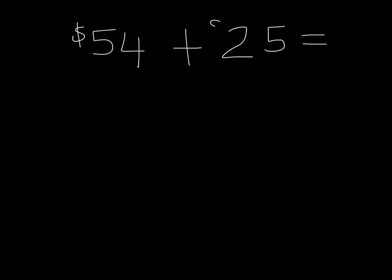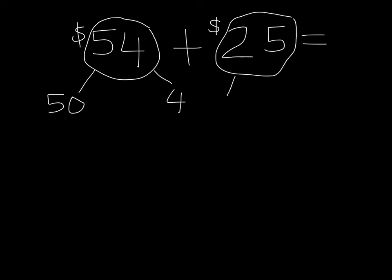Remember, we need to expand the number. So I take 54, and 54 is made up of 50 and 4. That's the tens, the 50, and then the ones is the 4. I'm going to take the 25 and expand it. 25 is made up of 20 and 5.